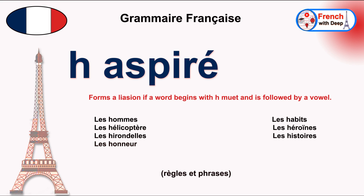We start with H-muet, or mute H. The rule is: it forms a liaison if a word begins with H-muet and is followed by a vowel. Par exemple: 'la zone' — in this case the S is followed by H, and H is never pronounced, and next we have O which is a vowel, so here S is pronounced as Z. That is a liaison, and it becomes 'la zone'.